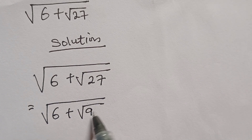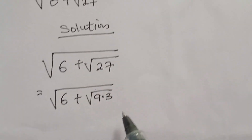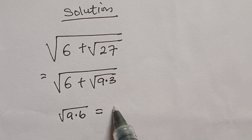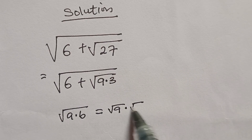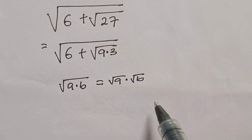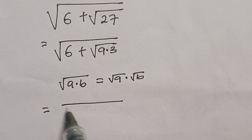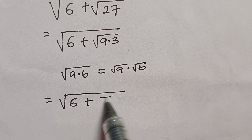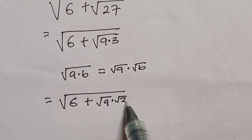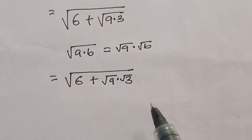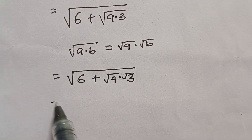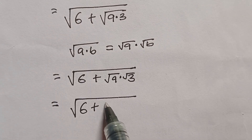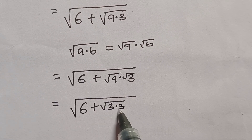I will rewrite 27 as 9 times 3. Therefore I have square root of 6 plus square root of 9 times 3. And don't forget, in mathematics, if you have square root of a times b, you can simply rewrite it as square root of a times square root of b. On rewriting 9 and 3 separately, I now have square root of 6 plus square root of 9 multiplied by square root of 3.